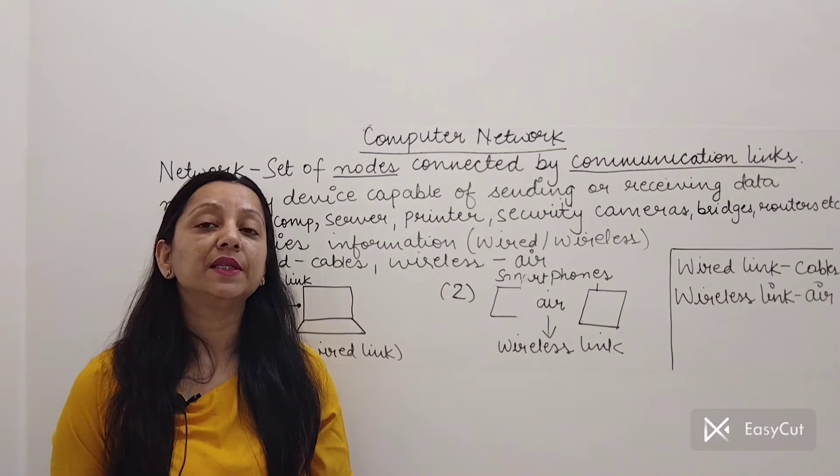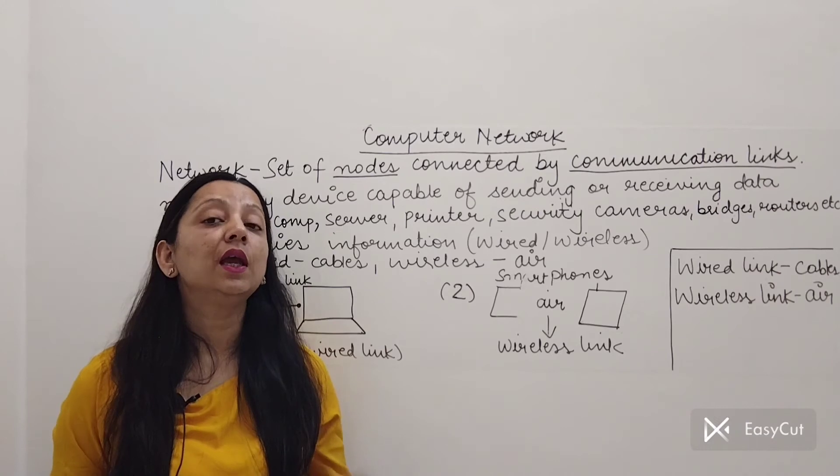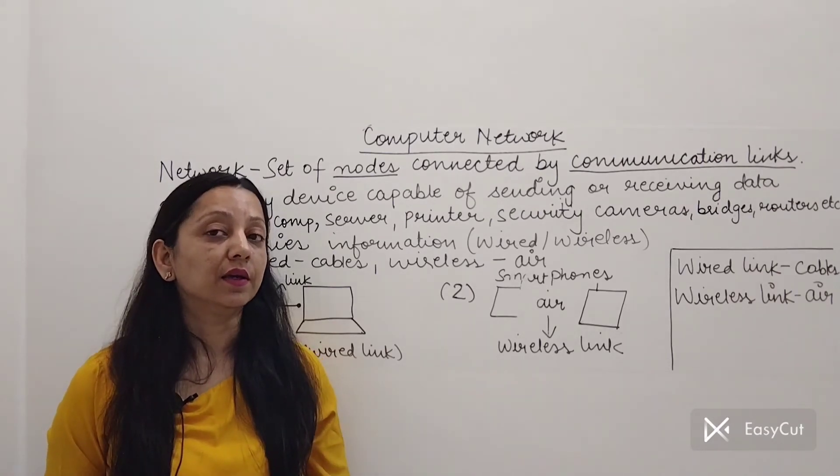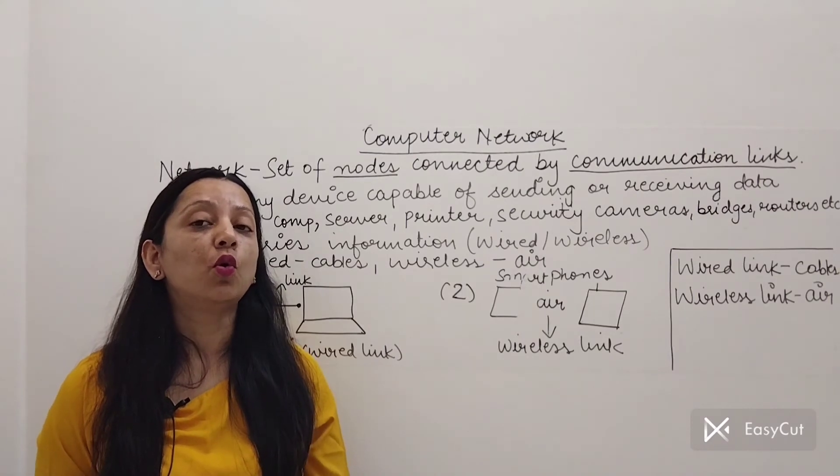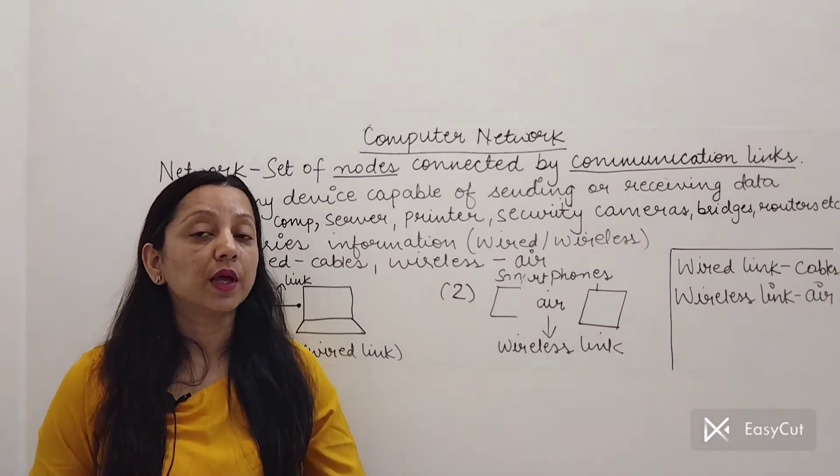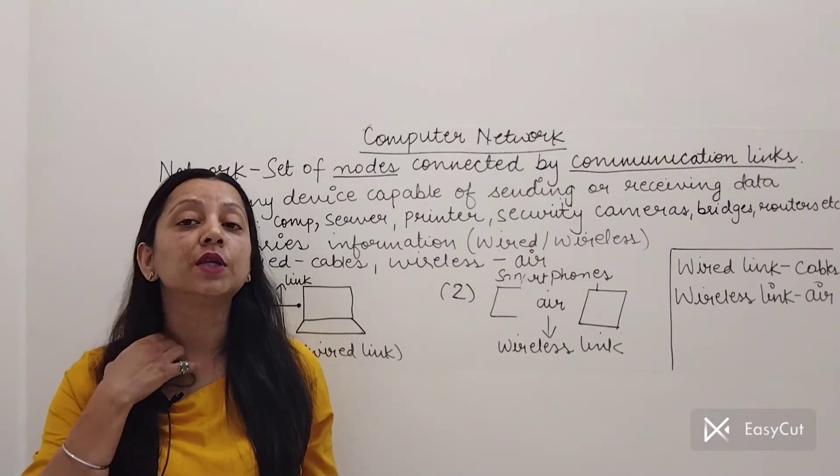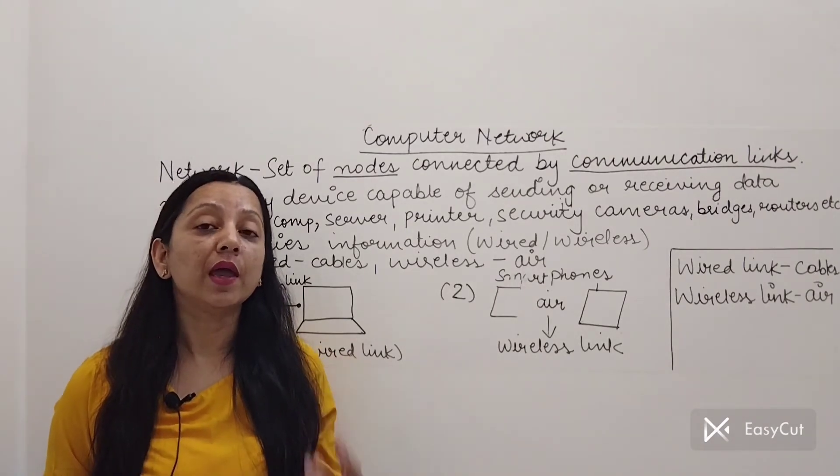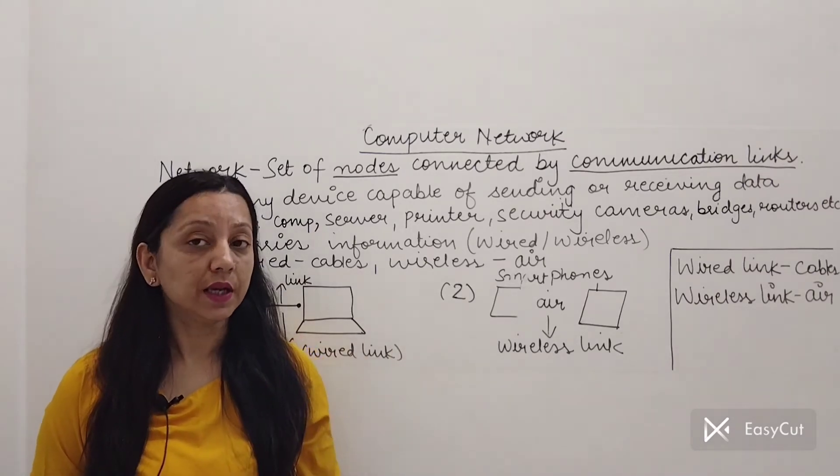Now a link can be basically of two types. One is the wired link and other is the wireless link. When you are using cables to connect two nodes, such a link is known as a wired link. And when no physical cables are used, the communication is through air. Such a link is known as a wireless link.